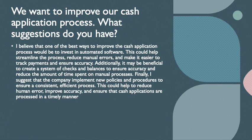The next question is: we want to improve our cash application process — what suggestions do you have? I believe that one of the best ways to improve the cash application process would be to invest in automated software. This could help streamline the process, reduce manual errors, and make it easier to track payments and ensure accuracy. Additionally, it may be beneficial to create a system of checks and balances to reduce time spent on manual processes. Finally, I suggest the company implement new policies and procedures to ensure a consistent, efficient process, reduce human error, and ensure that cash applications are processed in a timely manner.